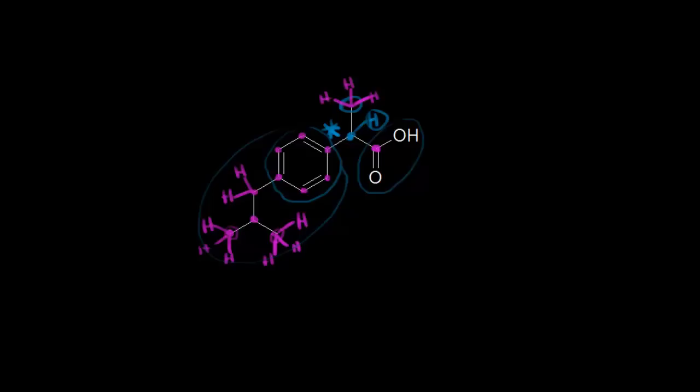So we have only one chiral center in ibuprofen. This is a very important skill to practice — look at the carbons, think about what's bonded to them. If there are four different groups bonded to a tetrahedral sp3 hybridized carbon, then we can call it a chirality center, or chiral center, or whatever term your professor wants to use.